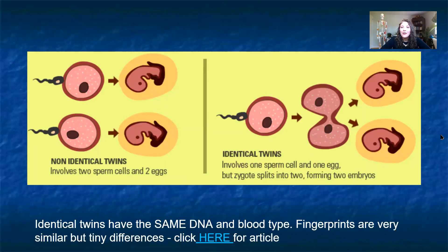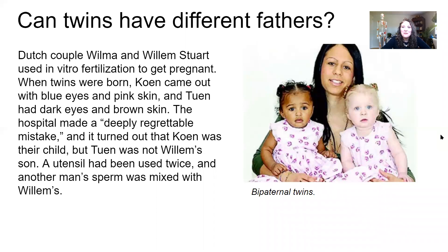Identical twins will have the same blood type and very similar fingerprints. Interestingly, there was one very rare case of bipaternal twins — twins that came from the eggs of one woman but were fertilized by two different men's sperm. This happened through an IVF mix-up where the utensil wasn't cleaned, allowing another male's sperm to mix with her eggs. She ended up having fraternal twins, but one baby was from a different father than the other.